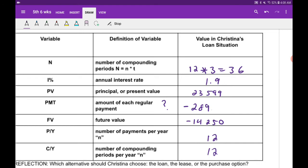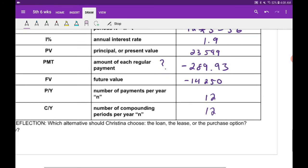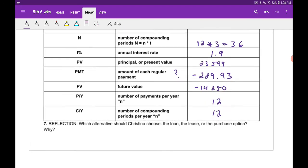So everything's good, so I'm going to hit the payment and there it is. $289.93. So if I go over here, it's going to be a negative $289.93. That's our payment a month, and that's even better.